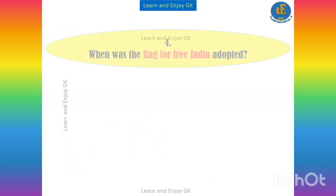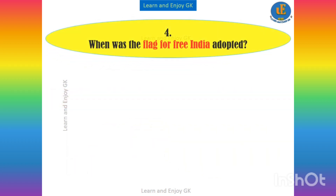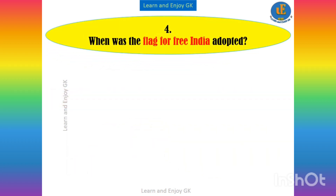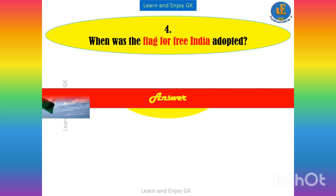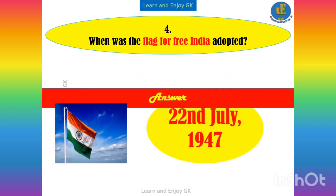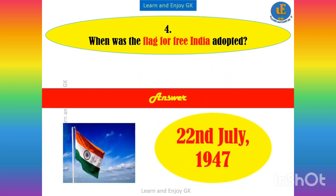When was the flag for free India adopted? Answer: 22nd of July, 1947.